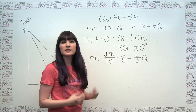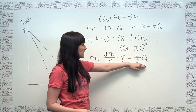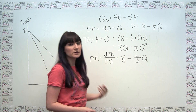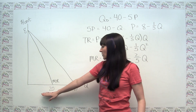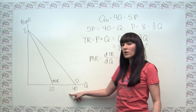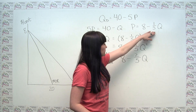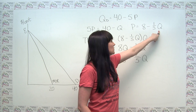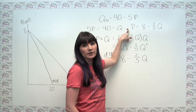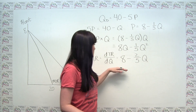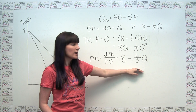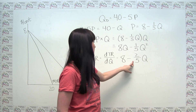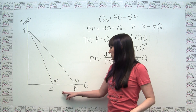We can also see that the marginal revenue curve is in fact twice as steep, because it has a coefficient of negative two-fifths, whereas the demand curve has a coefficient of negative one-fifth. We can confirm that the demand curve hits the quantity axis at Q equals 40, since 40 times one-fifth is 8 and 8 minus 8 is zero. And the marginal revenue curve hits the horizontal axis at Q equals 20, since 20 times two-fifths equals 8, and 8 minus 8 is zero.